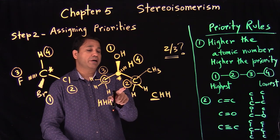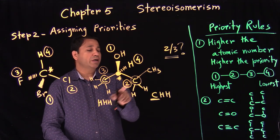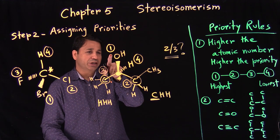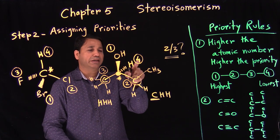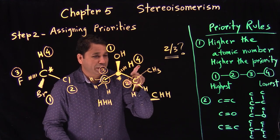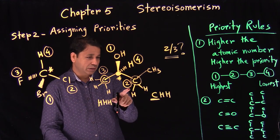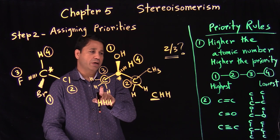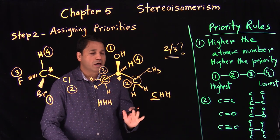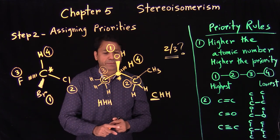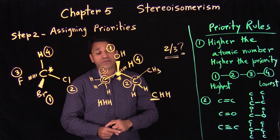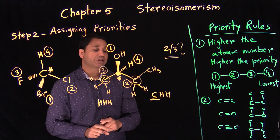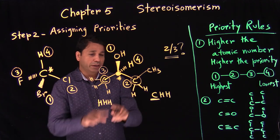Which gets the higher priority? There's a carbon here — carbon has a higher atomic number. So that group gets number two priority, and the other gets number three priority. When you write priorities, you can write them down next to the group.